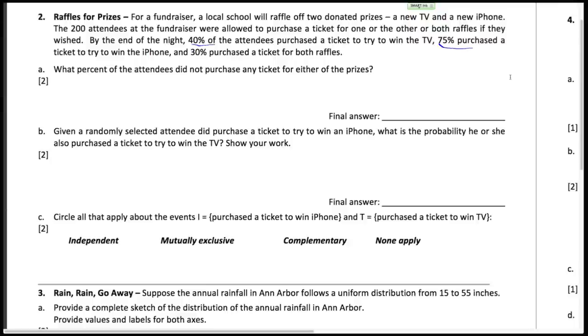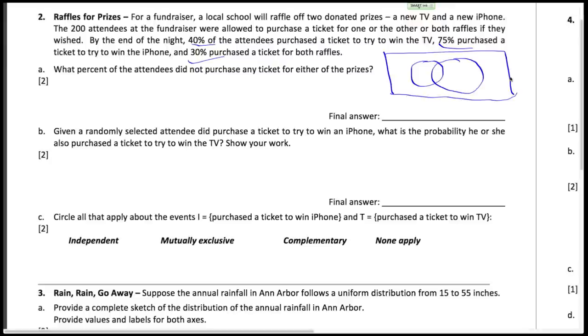So here's the Venn diagram. This box is the universe of things that can happen. Some people bought iPhones, some people bought TVs, and some people who are out here, all these people, didn't buy either.